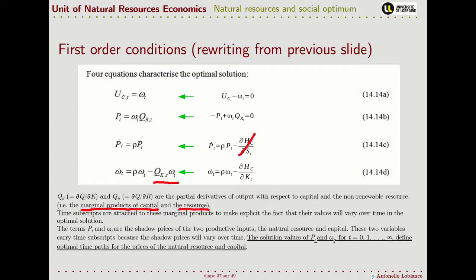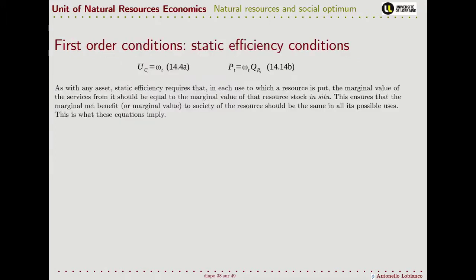So q_k and q_r are what we call in economics the marginal products of capital K and natural resources — how much production will increase at the margin. u_c is the marginal utility of consumption: how much utility increases with a marginal increase in consumption. What we want to obtain here is the optimal time path of the price of natural resources and capital from now to infinity, and this optimal path represents the solution to our problem together with the optimal path of the control variables.